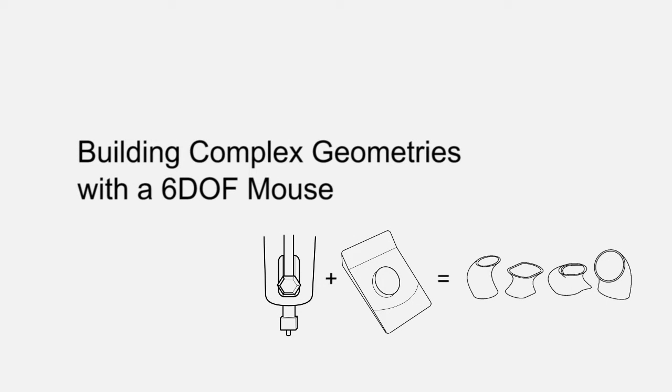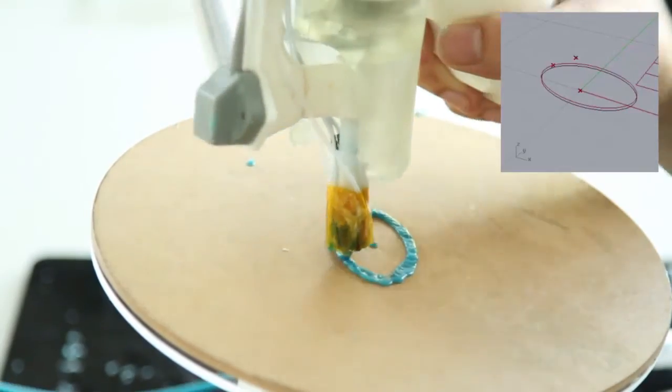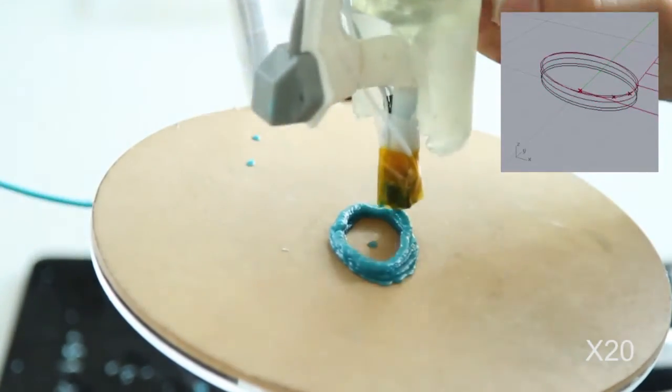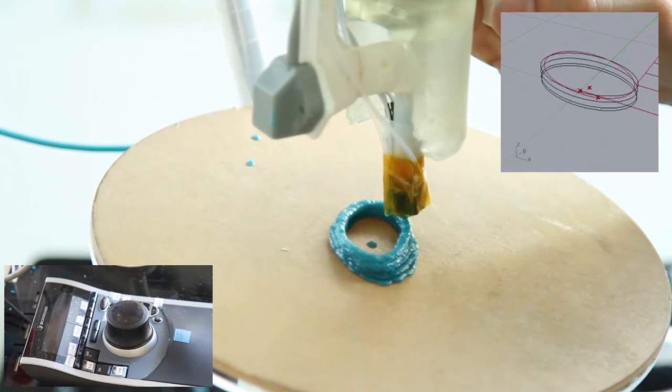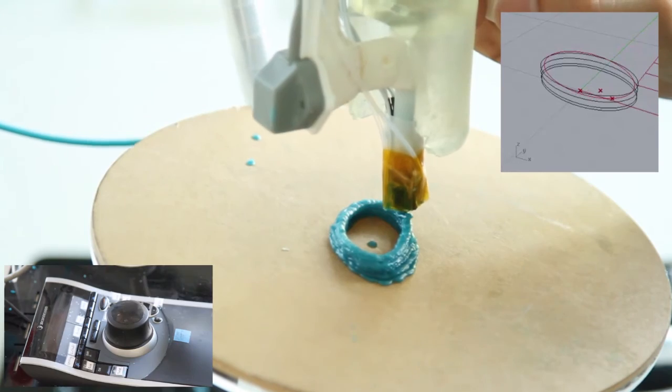To design complex geometries, Decoil lets users translate, scale, rotate, and tilt a coil shape using a 6 degree of freedom mouse operated with a non-dominant hand. In this example, we add a twist in an extrusion by rotating each layer along the z-axis. This is achieved by simply rotating the 6 degree of freedom puck around the z-axis between each layer.